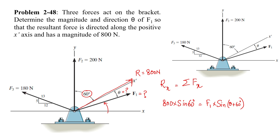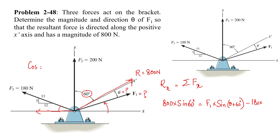F3 is directed in this quadrant, so it will have an x-component. Since that x-component is directed along the negative x-axis, it will be negative. The magnitude is 180. We are not given the angle directly, but we have a right-angle triangle where the base is 12, perpendicular is 5, and hypotenuse is 13. So if we measure this angle with the x-axis, we will use cosine. Calling this angle alpha, cos alpha equals 12 over 13, which is multiplied with 180 to get the x-component of F3.